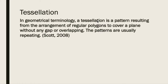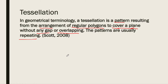In geometrical terminology, a tessellation is a pattern resulting from an arrangement of regular polygons to cover a plane. The common denominator is that it covers a plane or surface without any gap or overlapping. The patterns are usually repeating. This is a definition by Scott in his book from 2008. And as Escher said, it is mathematical but also artistic.